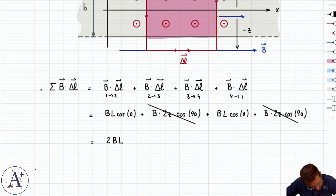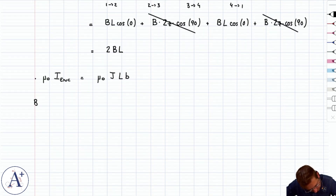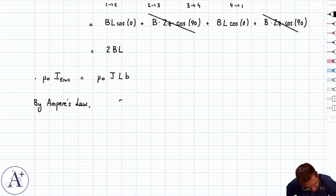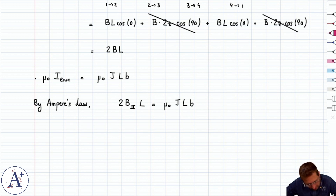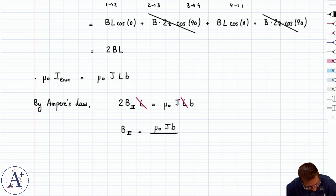So μ₀·I_encircled equals μ₀·J·L·b. By Ampere's law, setting 2B₂L equal to μ₀·J·L·b, the L cancels on both sides — as expected, since it's an infinite slab along x — and we get B₂ equals μ₀·J·b divided by 2 in magnitude.